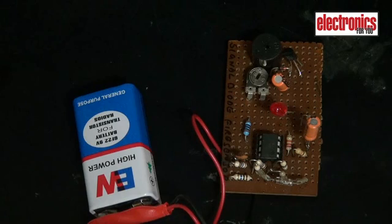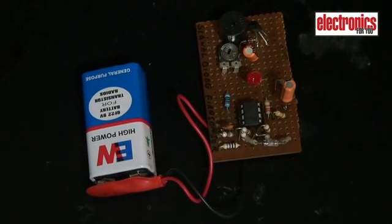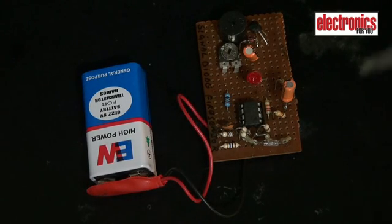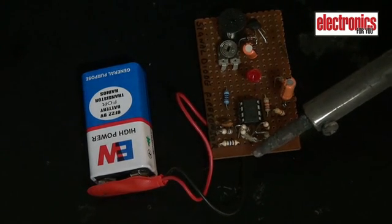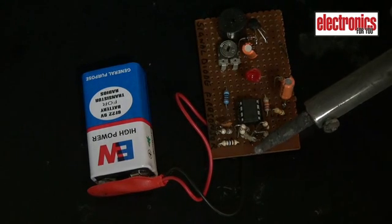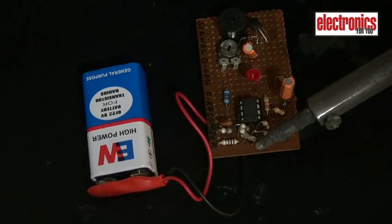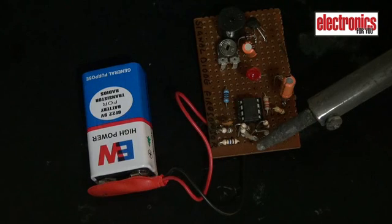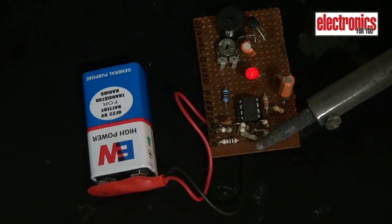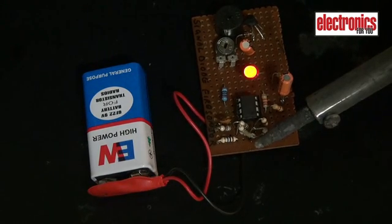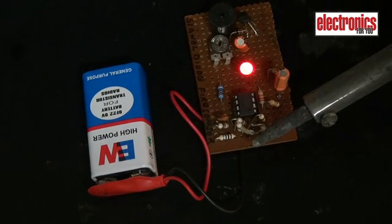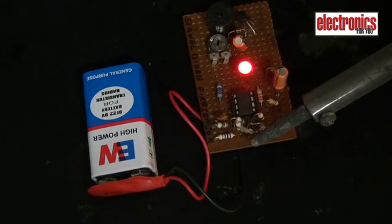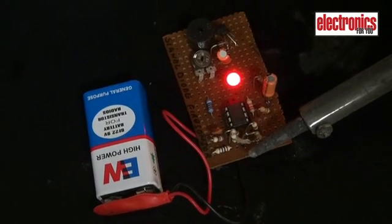The working is simple. The ZOA71 senses heat from a source such as fire or a soldering iron. Its reverse resistance drops, resulting in an increase in voltage at the non-inverting pin of the CA3140. This makes the IC output go high, and thus the LED glows and the buzzer beeps. The ZOA71 is a simple and inexpensive component that can be used as a fire sensor.